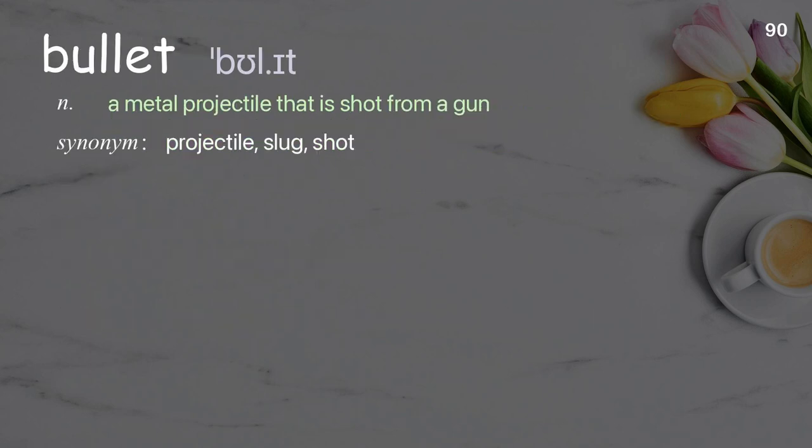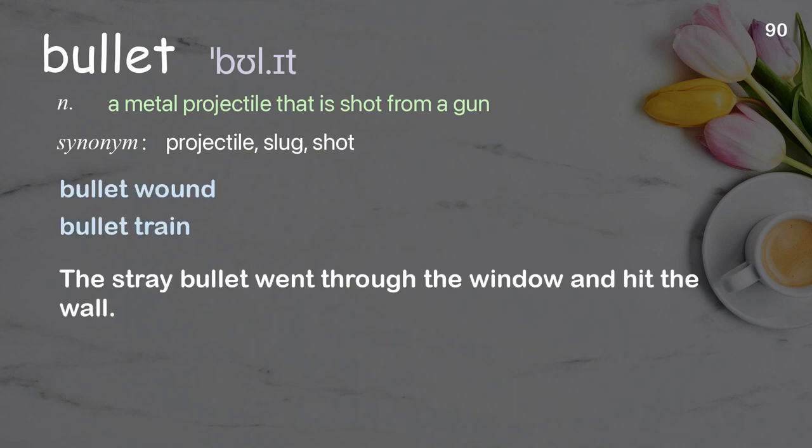Bullet: a metal projectile that is shot from a gun. Examples: bullet wound, bullet train. The stray bullet went through the window and hit the wall.